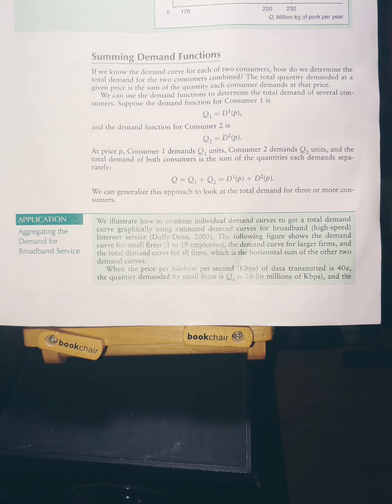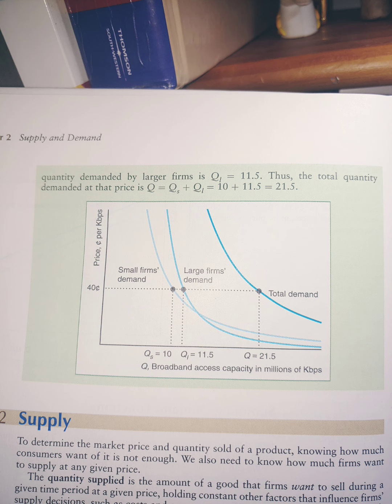When the price per kilobyte per second (kbps) of data transmitted is 40 cents, the quantity demanded by small firms is Qₛ = 10 in millions of kilobytes per second, and the quantity demanded by larger firms is Q_L = 11.5. Thus, the total quantity demanded at this price is Q = Qₛ + Q_L = 10 + 11.5 = 21.5.